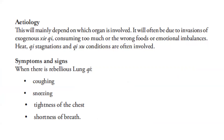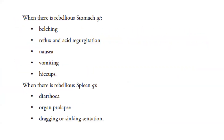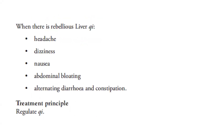Symptoms and signs: when there is rebellious lung qi, there will be coughing, sneezing, tightness of the chest, and shortness of breath. When there is rebellious stomach qi: belching, reflux and acid regurgitation, nausea, vomiting, and hiccups. When there is rebellious spleen qi: diarrhea, organ prolapse, and a dragging or sinking sensation. When there is rebellious liver qi: headache, dizziness, nausea, abdominal bloating, and alternating diarrhea and constipation.